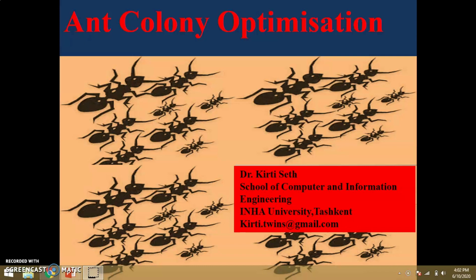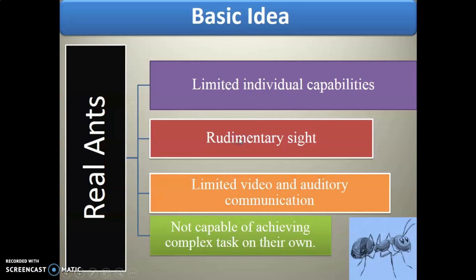As the name suggests, ant colony optimization is a bio-inspired optimization algorithm which is based upon the behavior of ants. Ants are species found in nature and we always notice the behavior that whenever they find some food source on the ground, within seconds more than hundreds of thousands of ants can be collected. This special behavior of ants was noticed by scientists, and on the basis of how they gather on the food source, the ant colony optimization algorithm was developed by Marco Dorigo in the early 1990s during his PhD thesis.